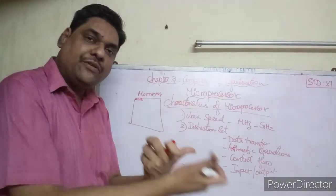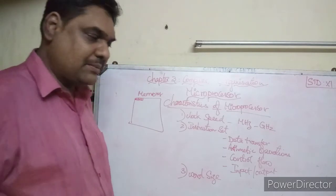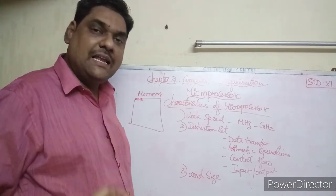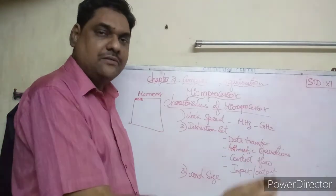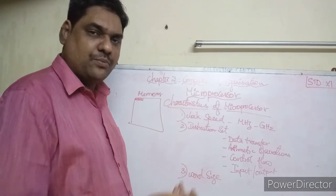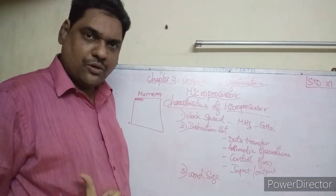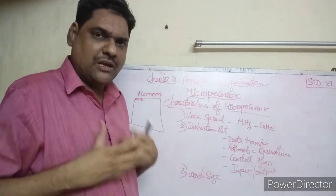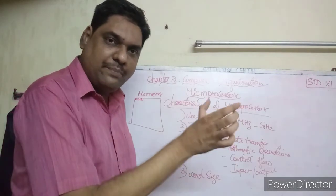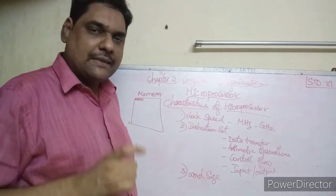Word size is the number of bits of information the microprocessor reads from RAM at one time. If a microprocessor reads 8 bits at a time, it is called an 8-bit microprocessor. If it reads 32 bits at a time, it is a 32-bit microprocessor. If it reads 64 bits at a time, it is a 64-bit microprocessor. The more bits processed at once, the faster the processor.